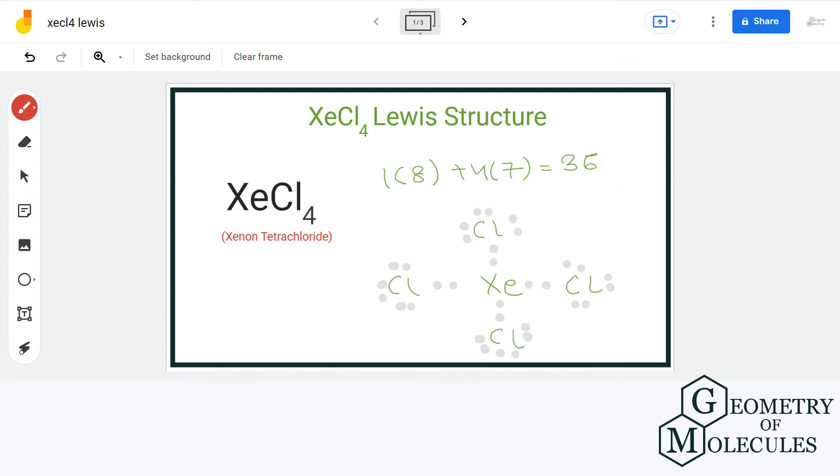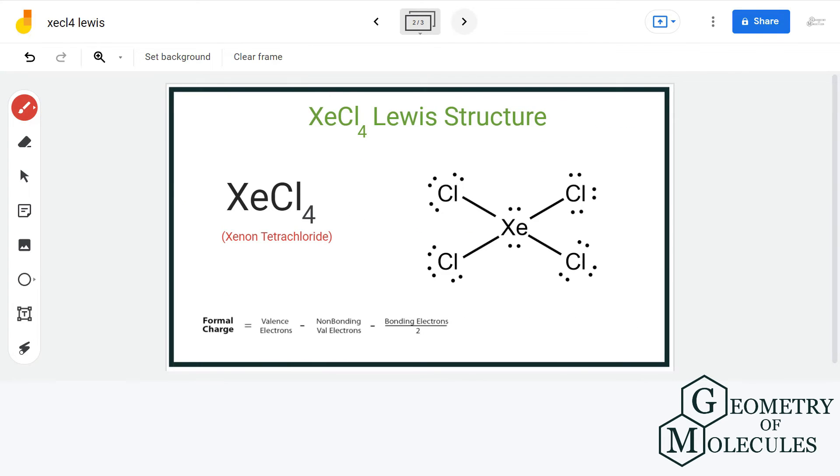Xenon can expand its octet and can hold more than 8 valence electrons and so we will assign it remaining 4 electrons. All the atoms have complete octet in this Lewis structure.